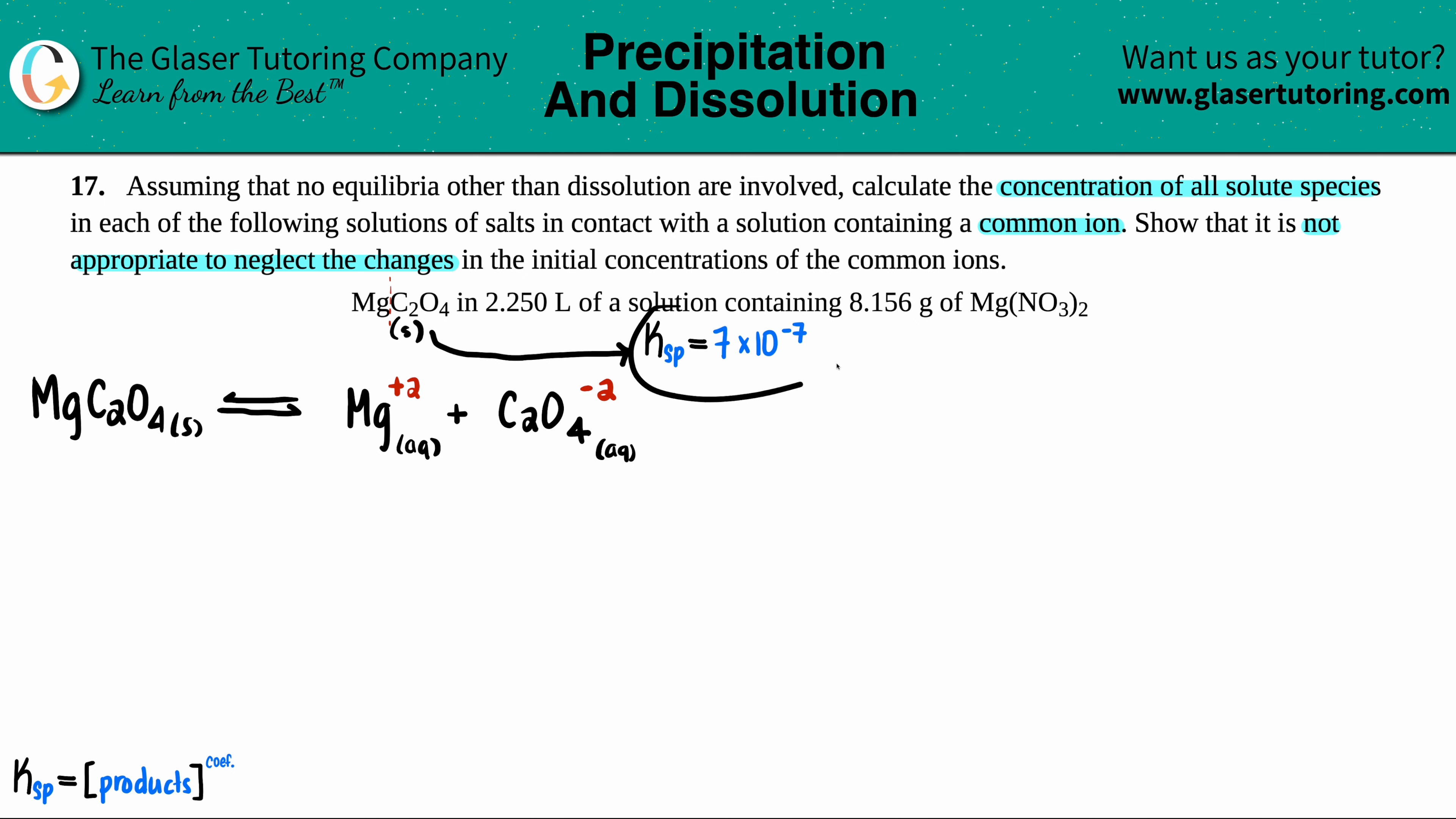We're going to use this equation to start writing the KSP general expression. Remember, the KSP is normally equal to just the products raised to their coefficients because no solids allowed. So no reactants allowed. So let's just write the formula. KSP would equal the concentration of the Mg2+ times the concentration of the oxalate, the C2O4, and that's the two minus charge. They both have no coefficients in the front, so that means that there's only one of them. Now we know the KSP value. The KSP was from the back of the textbook, that's 7 times 10 to the negative 7th.